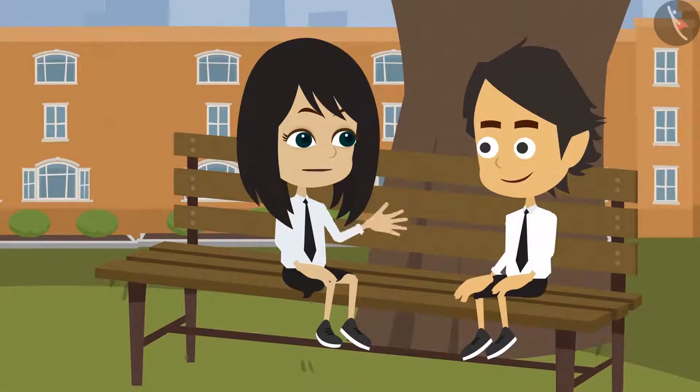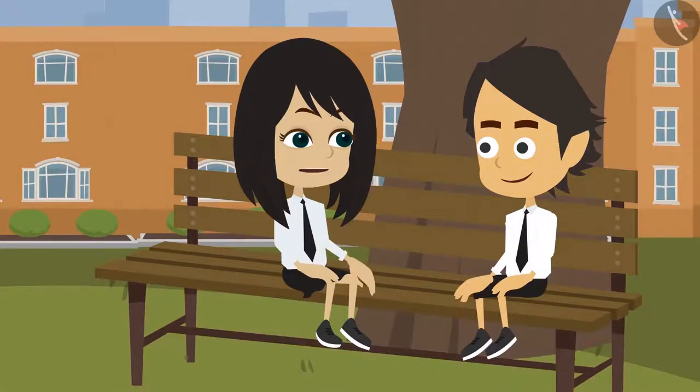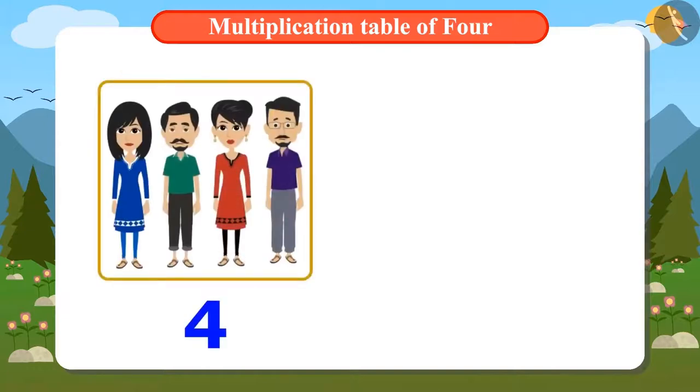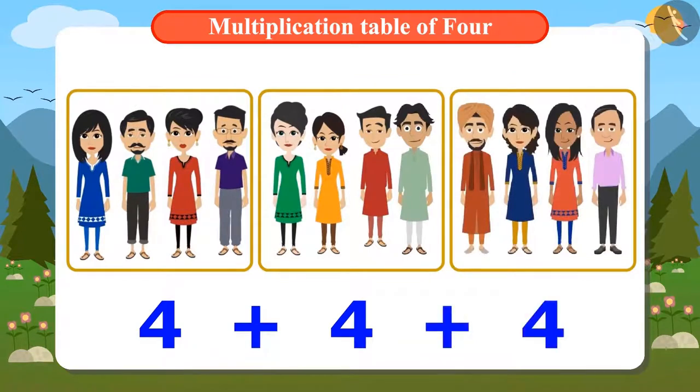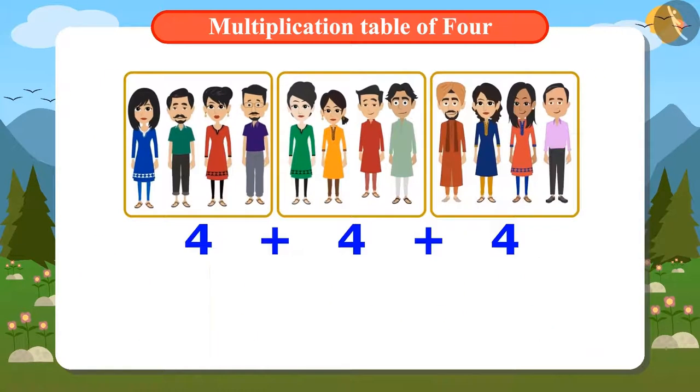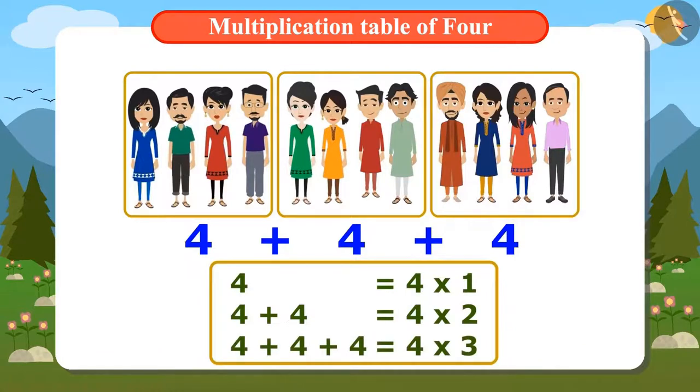And how many guests can use one table? 4. Each table is for 4 guests. To know how many guests will use 2 tables, you have to add 4 two times. For 3 tables, you have to add 4 three times. That means you have to read the multiplication table of 4.